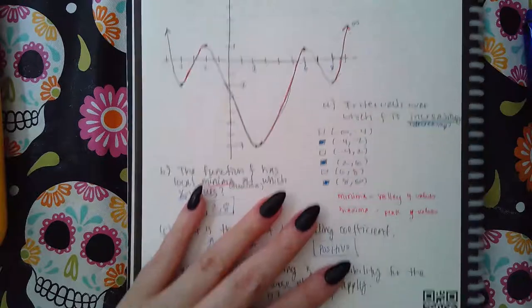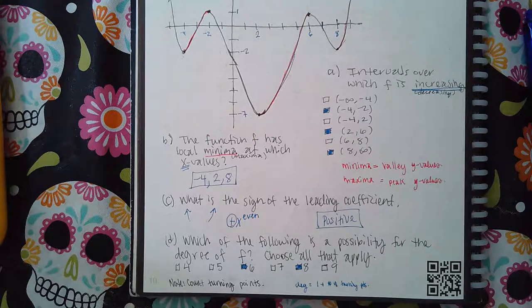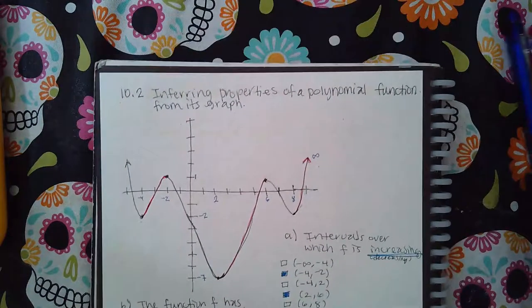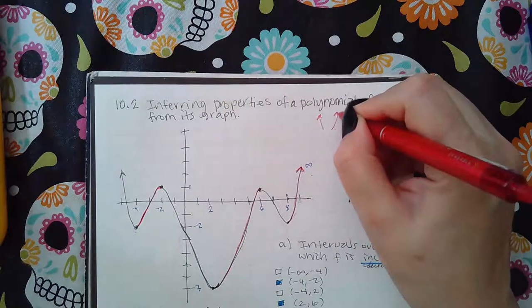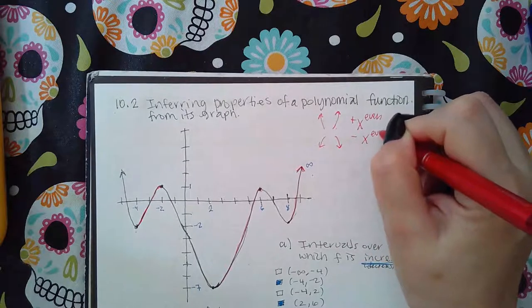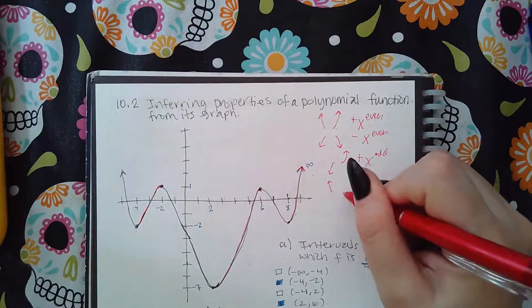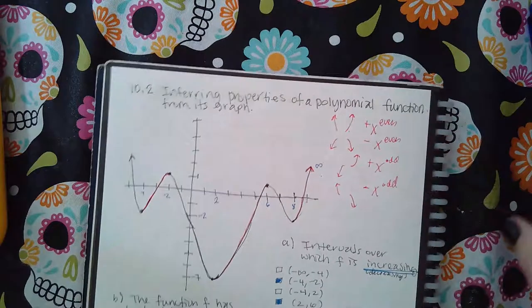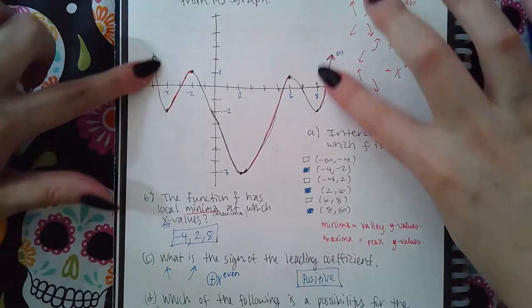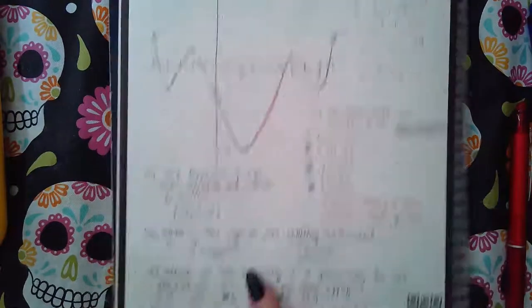Now it also says what is the sign of the leading coefficient. Here you really need to understand your end behavior and what they mean in order to do this problem. There are four different kinds of end behavior: going upward which is a positive x to the even, going downward which is a negative x to the even, going down on the left and up on the right which is a positive x to the odd, and up on the left and down on the right which is a negative x to the odd. We need to identify which one this is—you only need to look at the ends to figure out which one it is. Both of my ends are going up, so according to this chart it means I have a positive x to the even kind of graph.